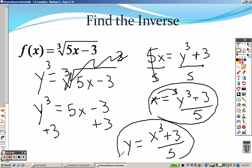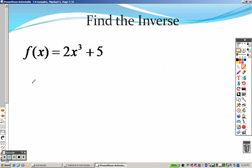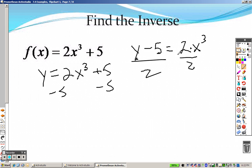So I get y equals 2x cubed plus 5. So to get x by itself, I need to subtract 5 on both sides, so I get y minus 5 equals 2x cubed. It's 2 times x, so I divide by 2 on both sides, so I get y minus 5 divided by 2 equals x cubed.